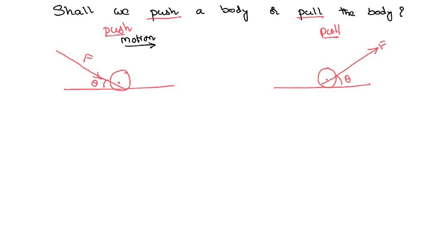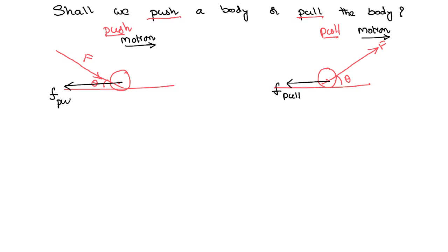It is obvious that as the body is moving in a forward direction, it is supposed to move in both cases. Friction comes into the picture which opposes the relative motion. This is the direction of the frictional force — in the case of a pull and in the case of a push.